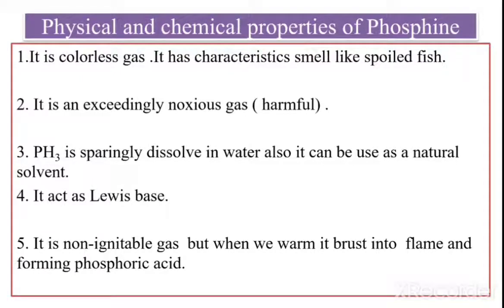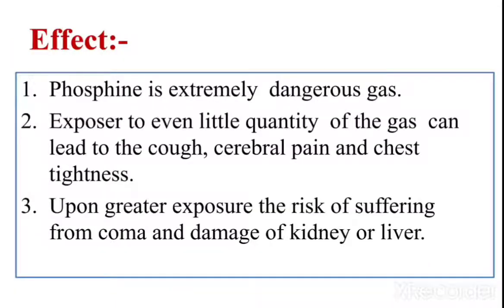Phosphine acts as a Lewis base, meaning it donates an electron pair. It is a non-ignitable gas, but when warmed it bursts into flame, forming phosphoric acid. Regarding health effects, the overdose of phosphine is extremely dangerous. When phosphine is inhaled, exposure to even a small quantity of the gas can lead to cerebral pain and chest tightness. Upon greater exposure, there is a risk of suffering from coma and damage to the kidney or liver. These are the side effects of phosphine.